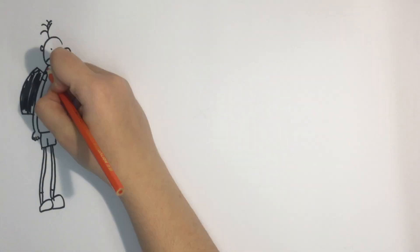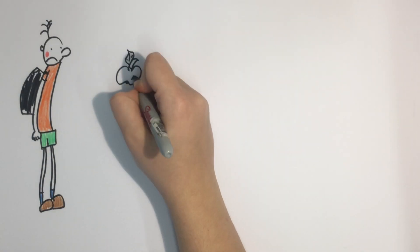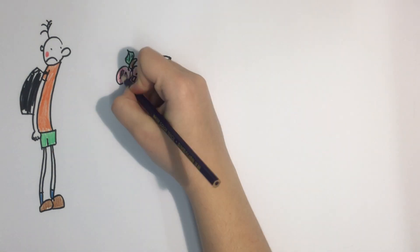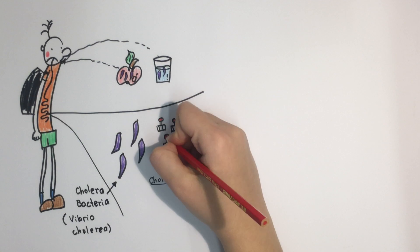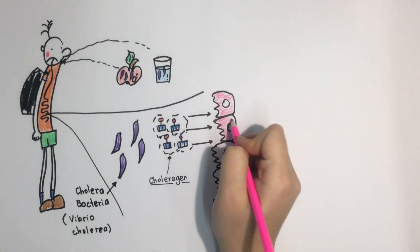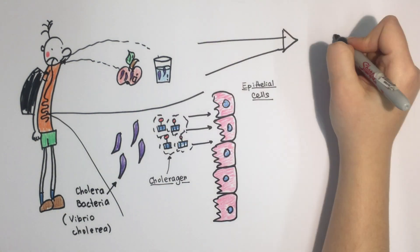When a person drinks water or eats food contaminated with the cholera bacteria, these bacteria make their way to the small intestine. The bacteria then secrete a toxin called choleragen, which enters epithelial cells via endocytosis. The effects of this toxin can be lethal if untreated.